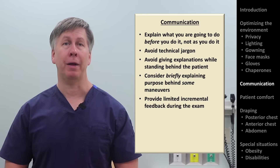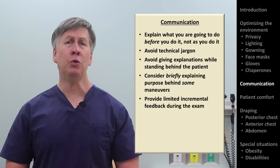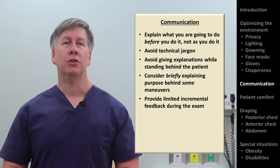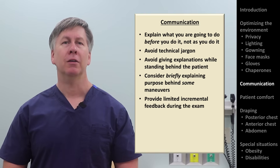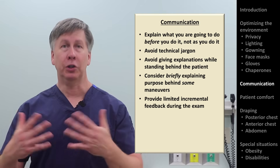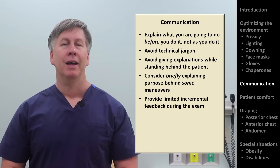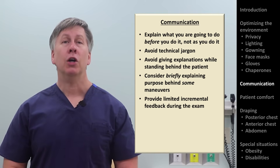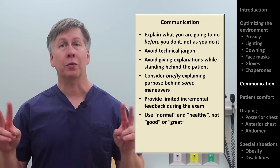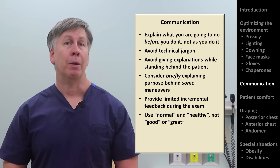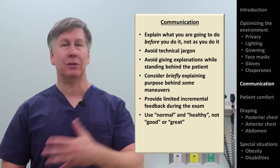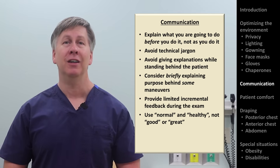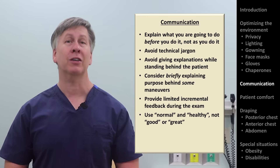Provide incremental feedback along the way by letting the patient know things are normal, but avoid overdoing this. Typically, let patients know their blood pressure immediately after measuring it, as patients are particularly interested in that value. After that, summarize findings no more than once after each large exam section. Also use the terms 'normal' or 'healthy' rather than 'good' or 'great' to describe your observations — that way you'll never accidentally tell a patient their breast or rectal exam was 'great.'